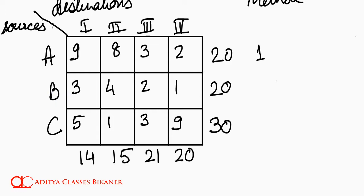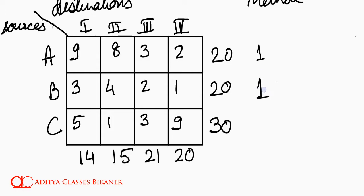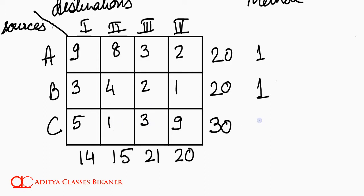What happens with B? B could have got its work done in 1 rupee, but if something goes wrong or due to a wrong decision, it might have to transport units at 2 rupees. So the penalty is the difference: 2 minus 1, giving a penalty of 1. What will C do? It will take 1 as its best cell. If something goes wrong it moves to the next cell, losing 2 rupees — because it has to go for 3 instead of 1. So C's penalty is 2.